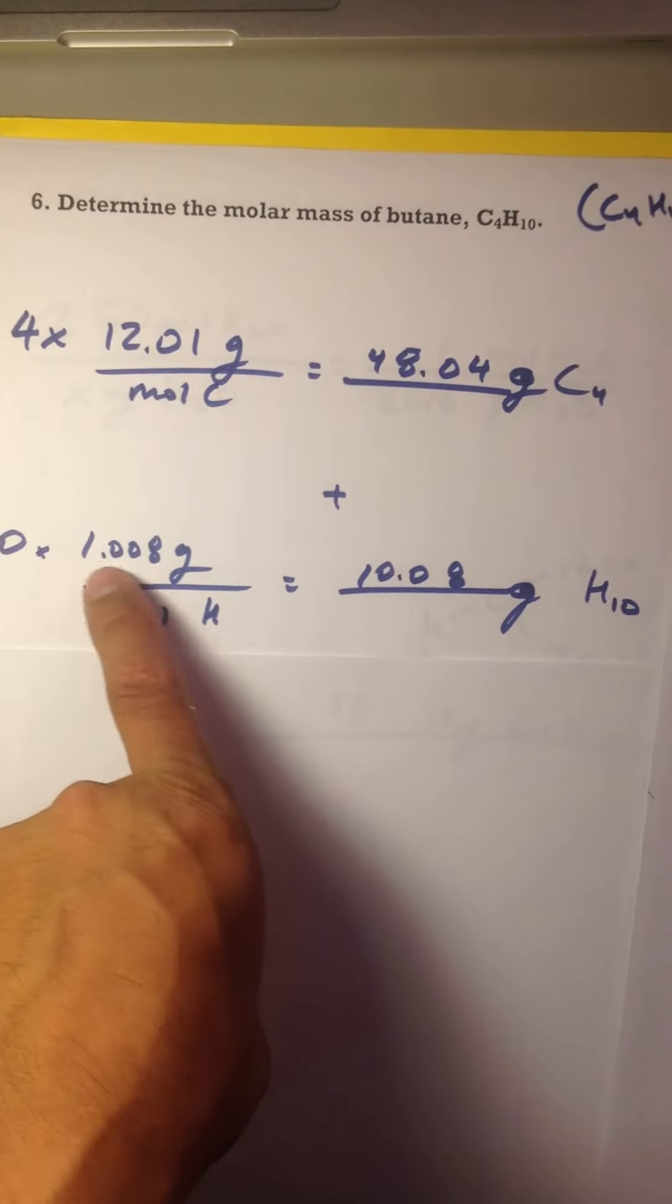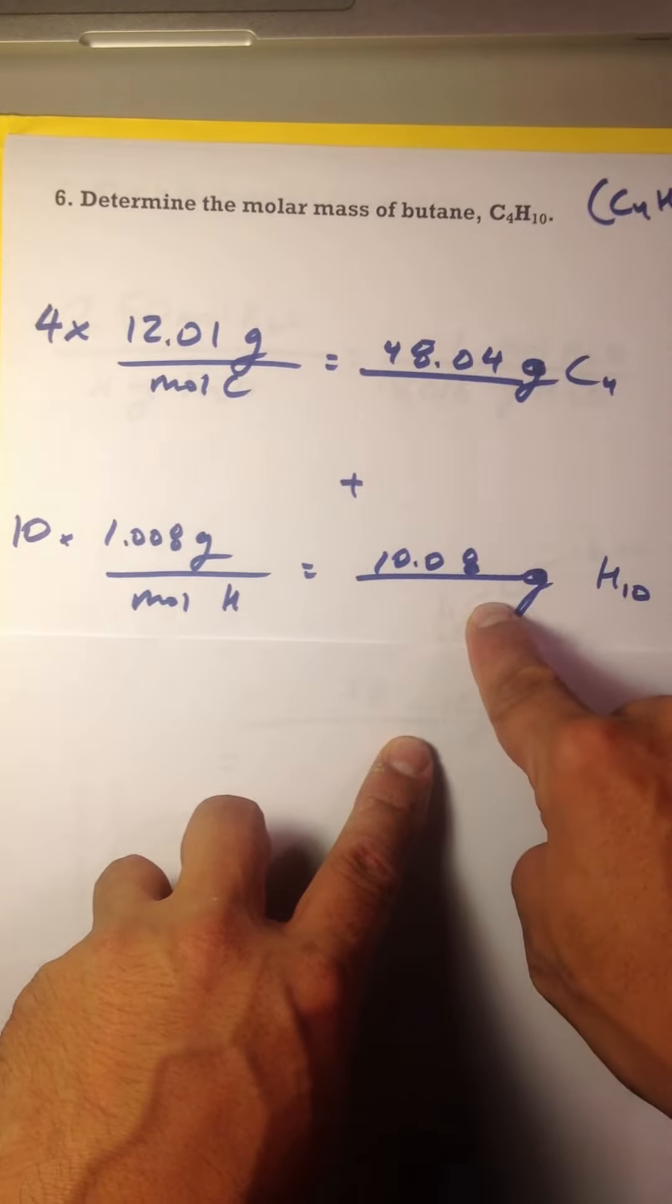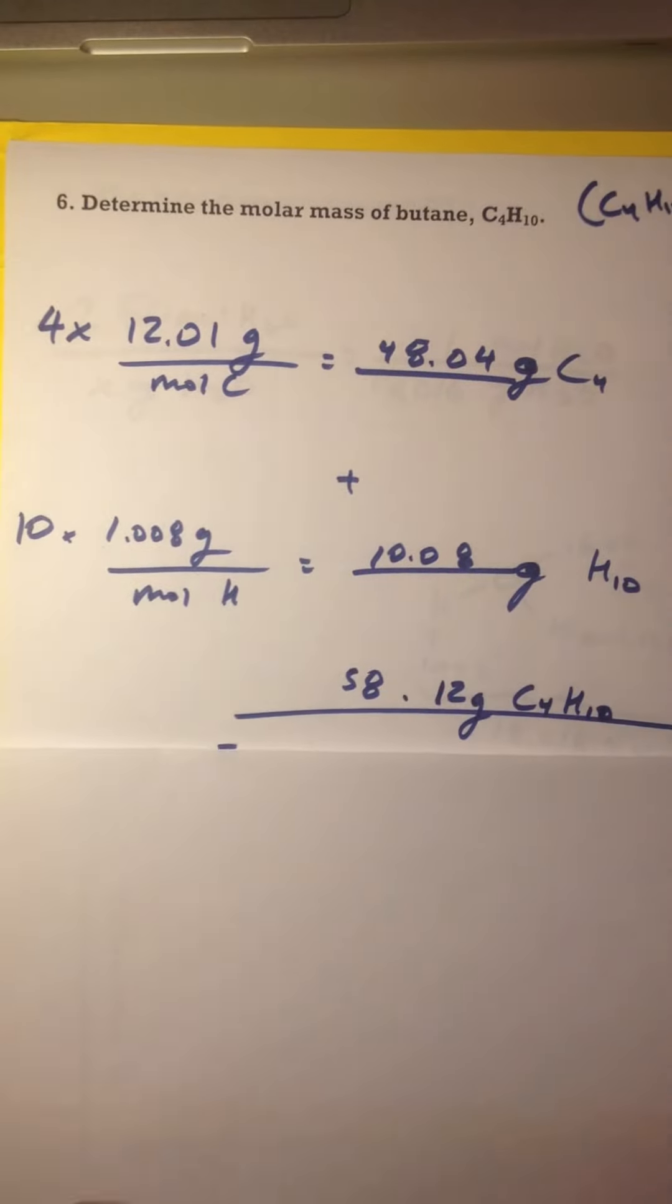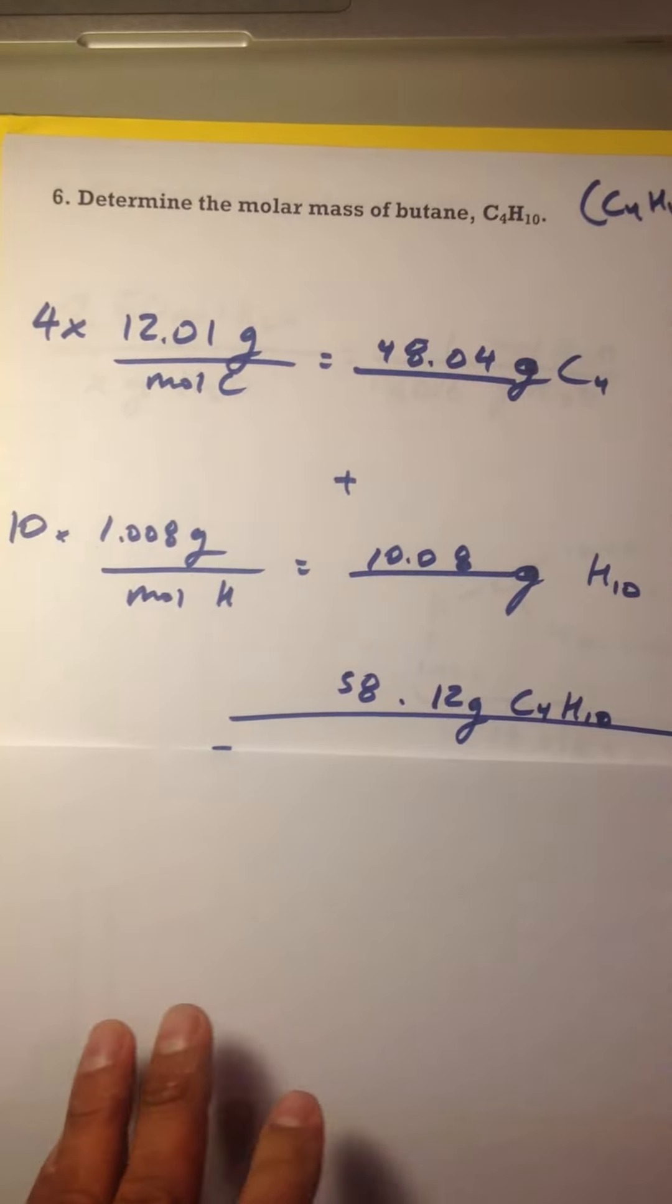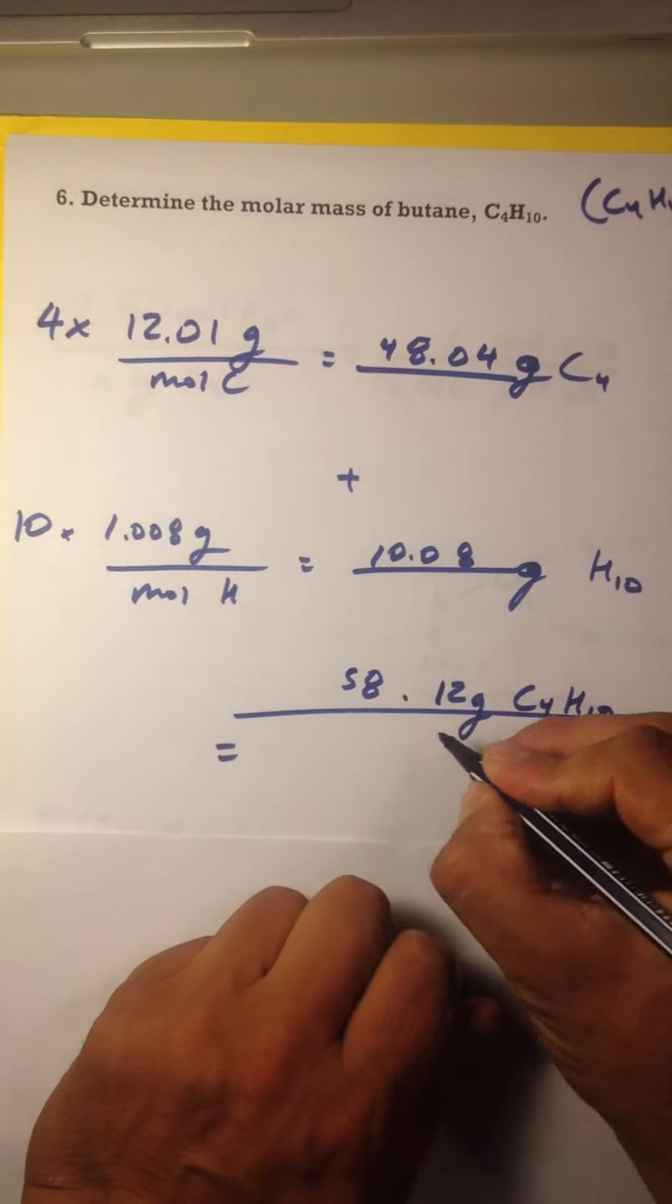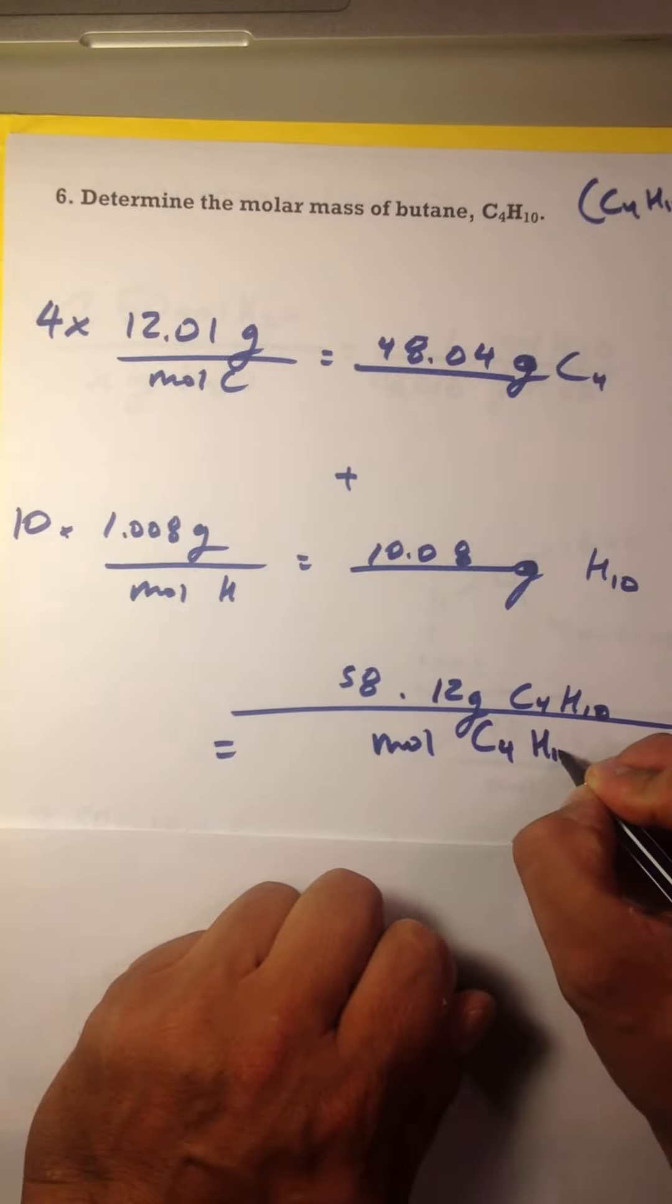Hey, you don't even need a calculator. Look, times that. And add them together. 8 and 4 is 12, 8 is 5. And you get 58.12 grams of C4H10 per mole of C4H10.